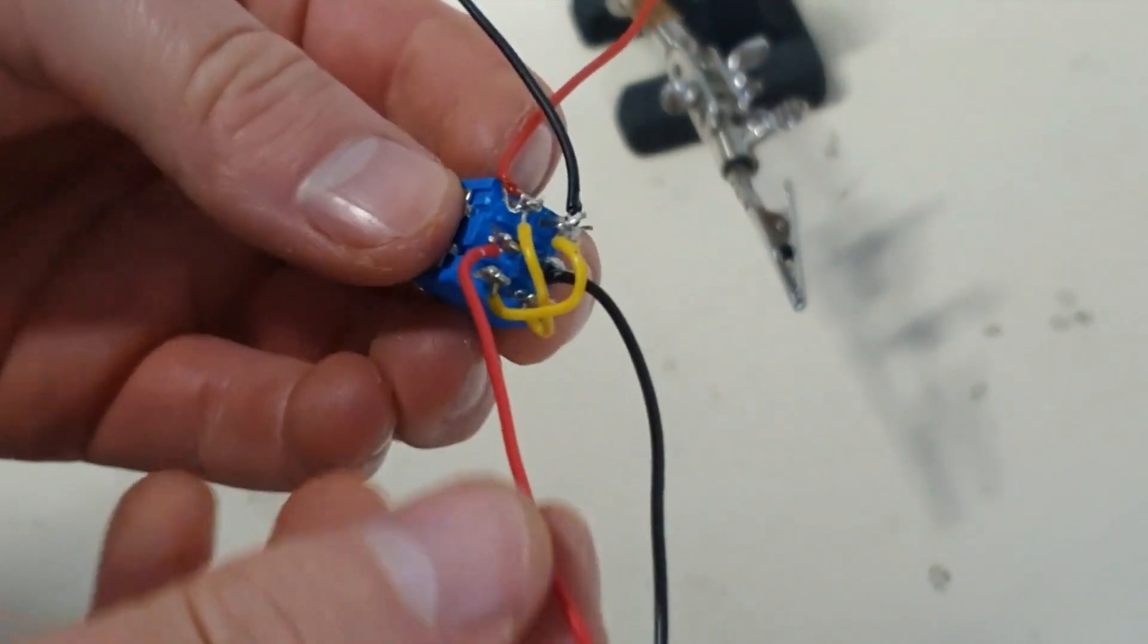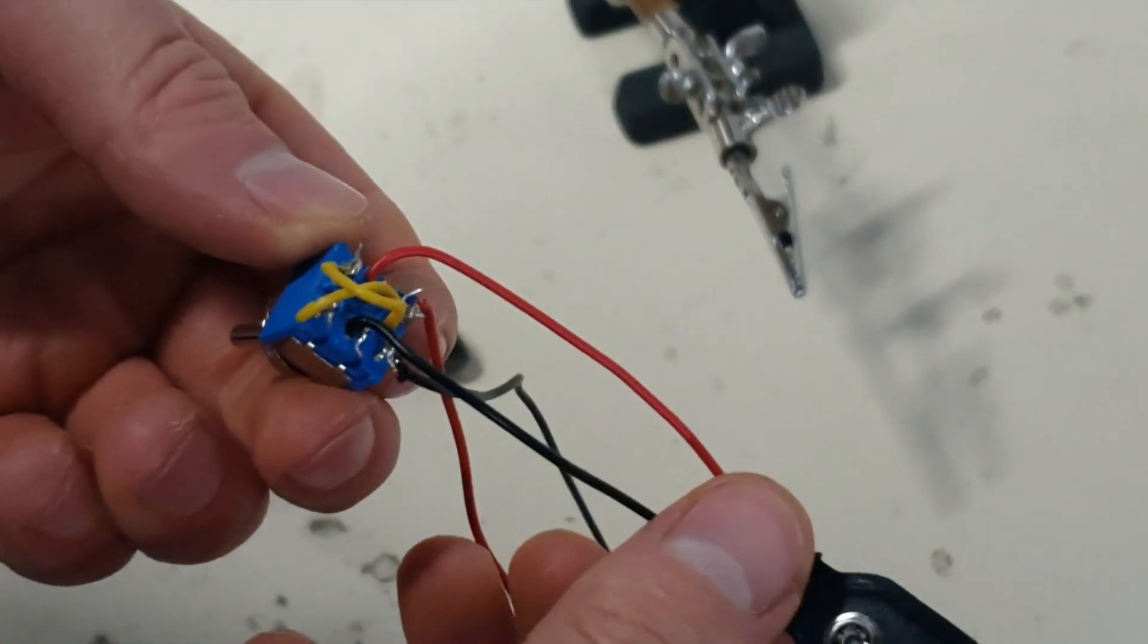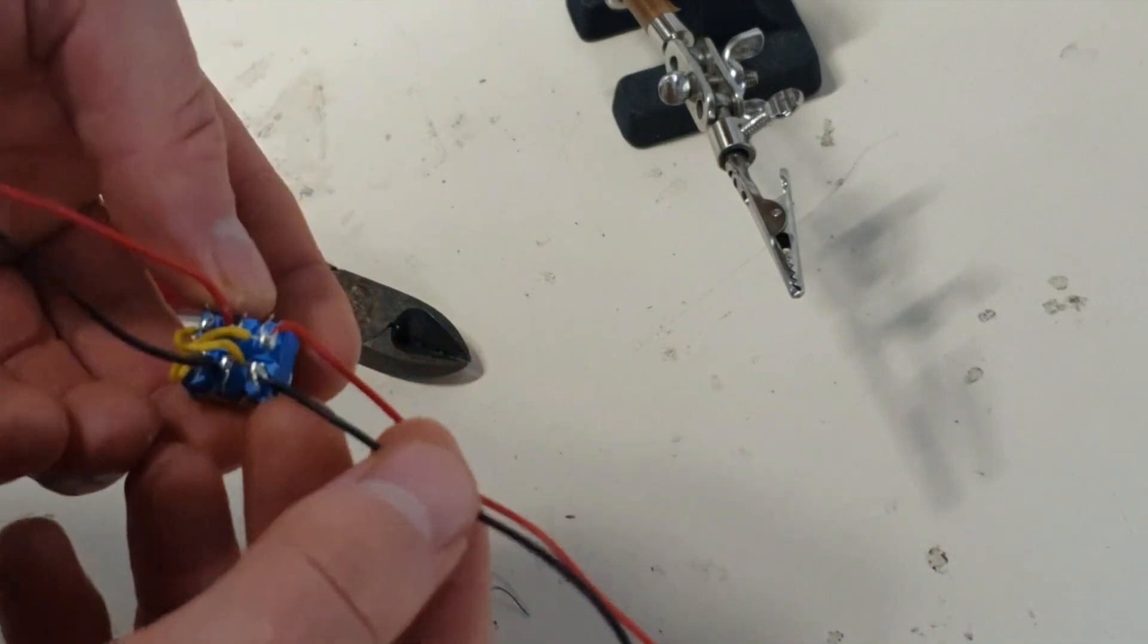So here it is with the excess snipped off. We've got the red and black battery snaps to the middle. We've got our yellows looped across the diagonals. And then our red and our black ready to go to the motor.